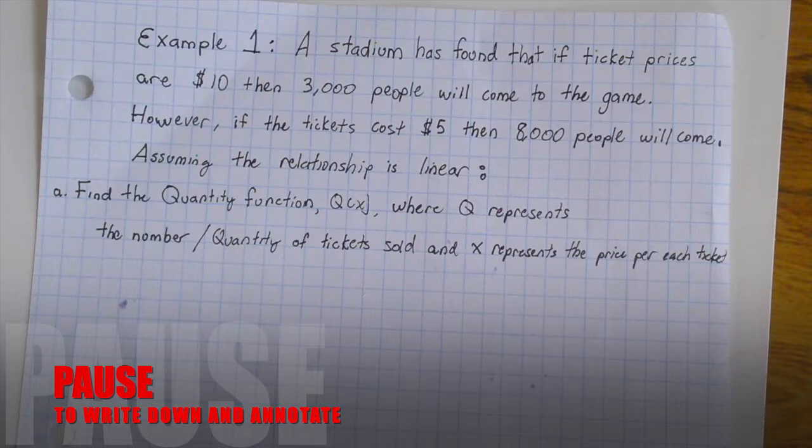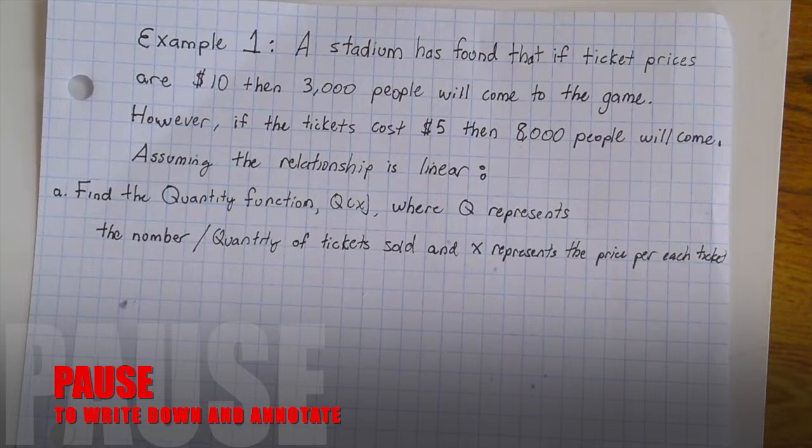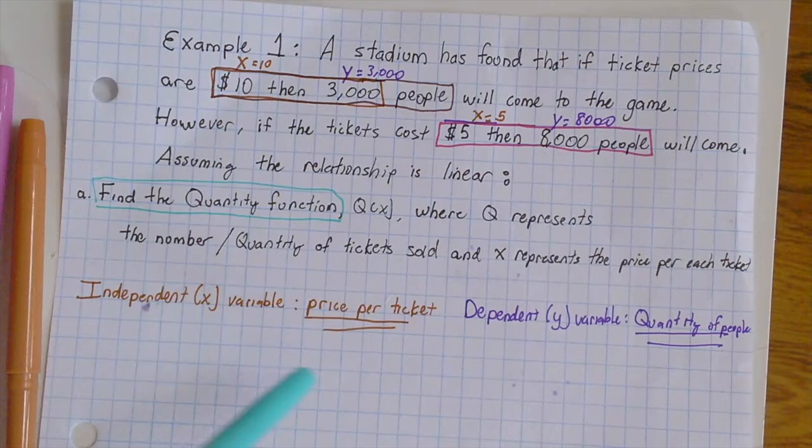Example 1. A stadium has found that if ticket prices are $10, then 3,000 people will come to the game. However, if the tickets cost $5, then 8,000 people will come. Assuming the relationship is linear, find the quantity function, Q(x), where Q represents the number or quantity of tickets sold, and x represents the price per each ticket. You should note that you have an independent x variable, which is the price per ticket, and a dependent y variable, which is the quantity of people who are buying these tickets.